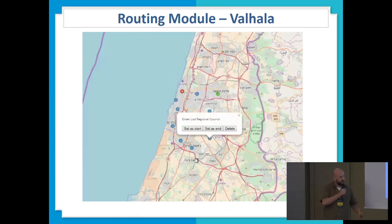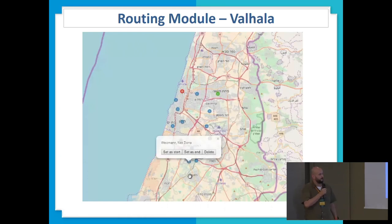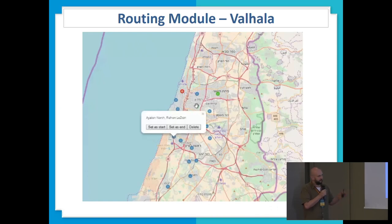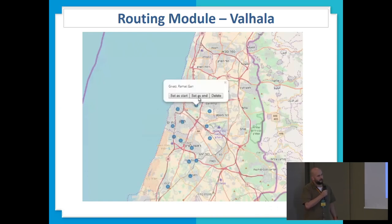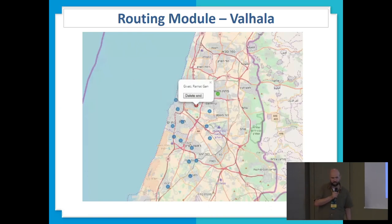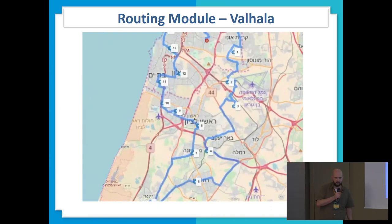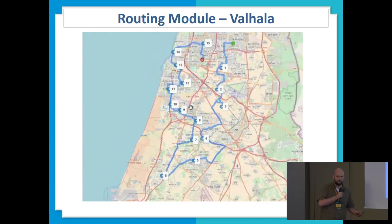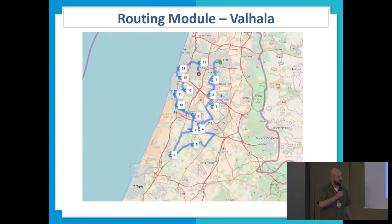In a short demonstration, we're clicking multiple points on the map, and once we calculate the route it will be ready momentarily. One limitation with Valhalla is that the data format must be OSM, so we translated our data into OSM format — that's how we're going to handle it in the background.